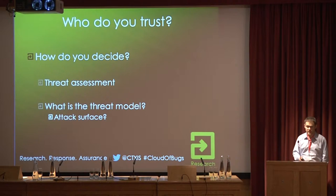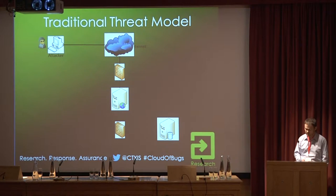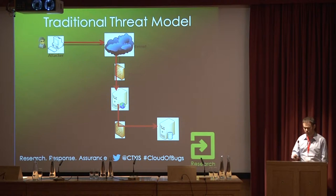The normal way to decide would be to do a threat assessment — to understand what the risks are and what the threat model of such an infrastructure is. What are the attack surfaces? It's useful to contrast against the traditional threat model, as that's what the likely alternative is going to be. In the traditional model, the attacker comes via the internet, usually to a web server, and then through some vulnerability can pivot onto a database server behind it.